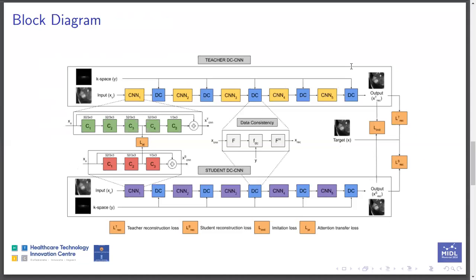We demonstrate our framework using DCCNN. Five cascades of five convolution layer is teacher. Five cascades of three convolution layer is student. Attention transfer is done between middle layers of each cascade. Imitation loss is obtained between teacher and student predictions.